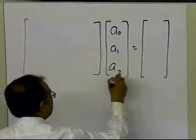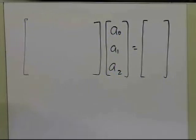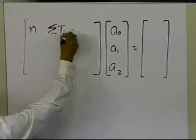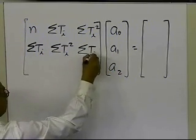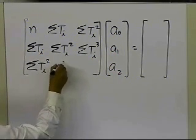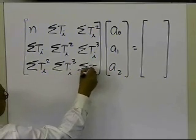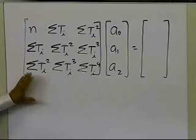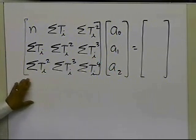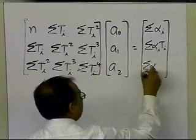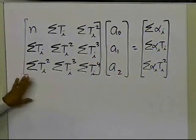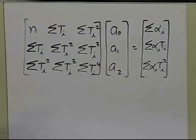The three constants a0, a1, and a2 of the polynomial model are solved using a coefficient matrix containing: n, summation of ti, summation of ti squared; summation of ti, ti squared, ti cubed; and summation of ti squared, ti cubed, ti to the fourth. The right-hand side vector is summation of αi, summation of αi·ti, and summation of αi·ti squared. All summations go from 1 to n, where n is the number of data points.